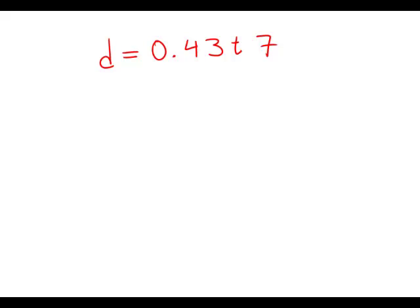We're told d equals 0.43t7, and we're told if t denotes the thousandth digit in the decimal representation of d above, what digit is t?